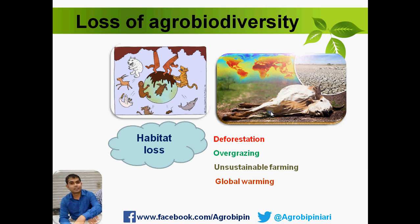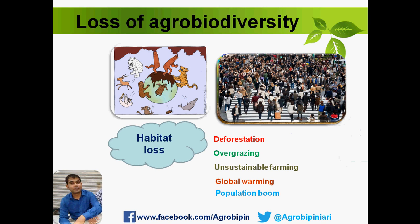Global warming, both natural and anthropogenic, is another threat. Man-made use of fossil fuels for agriculture, industry, and other activities is disturbing our atmosphere and creating pressure on the agro-ecosystem. Population boom is also a factor — our population is increasing day by day, now reaching nearly nine billion people, and this encroachment on land is disturbing agro-diversity continuously.